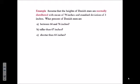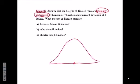When you see a problem and it tells you that you have a normal distribution, the first thing you should do is make a picture of the bell curve. Put in the mean, which is 70 in this case, and the standard deviation, which is 3.